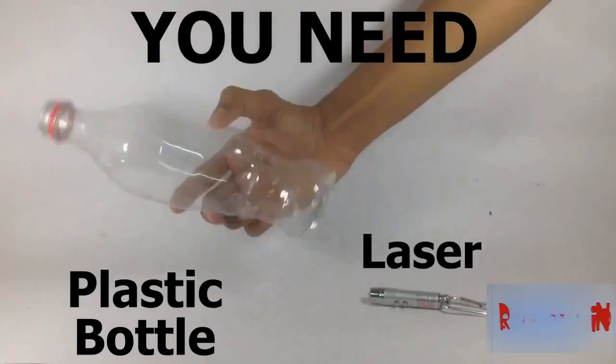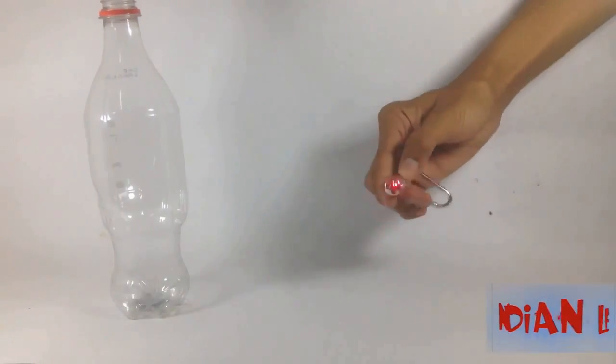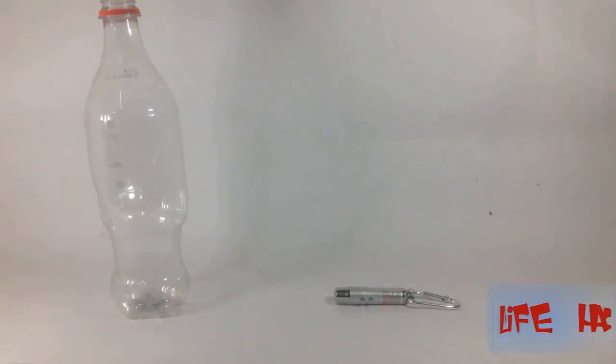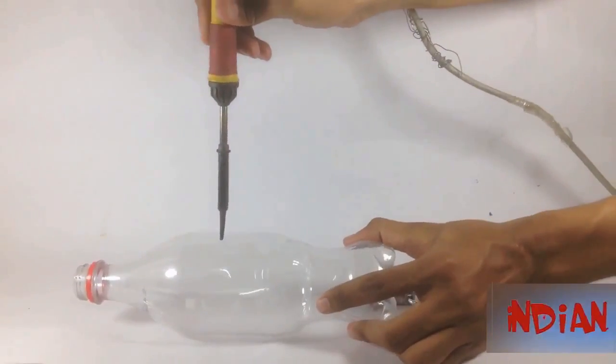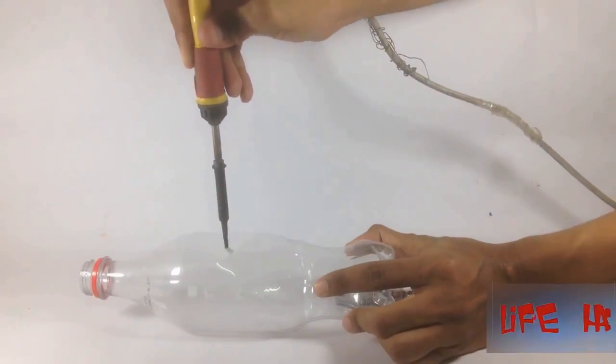Now we will see how laser beam changes direction with the flow of water. For doing this experiment you need one water bottle and one laser. Now make a gentle hole in the bottle. Here I am using a solder machine.